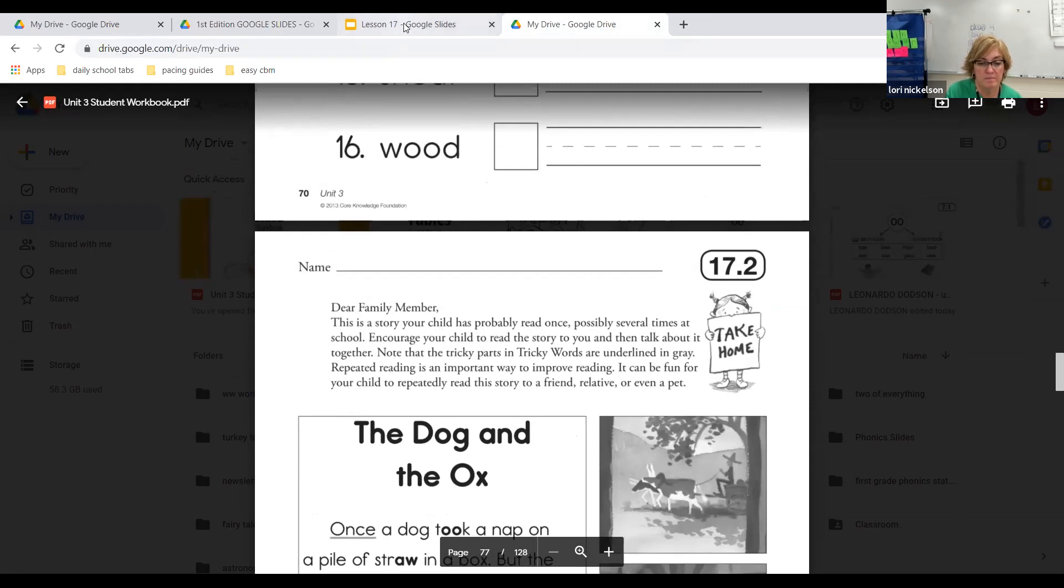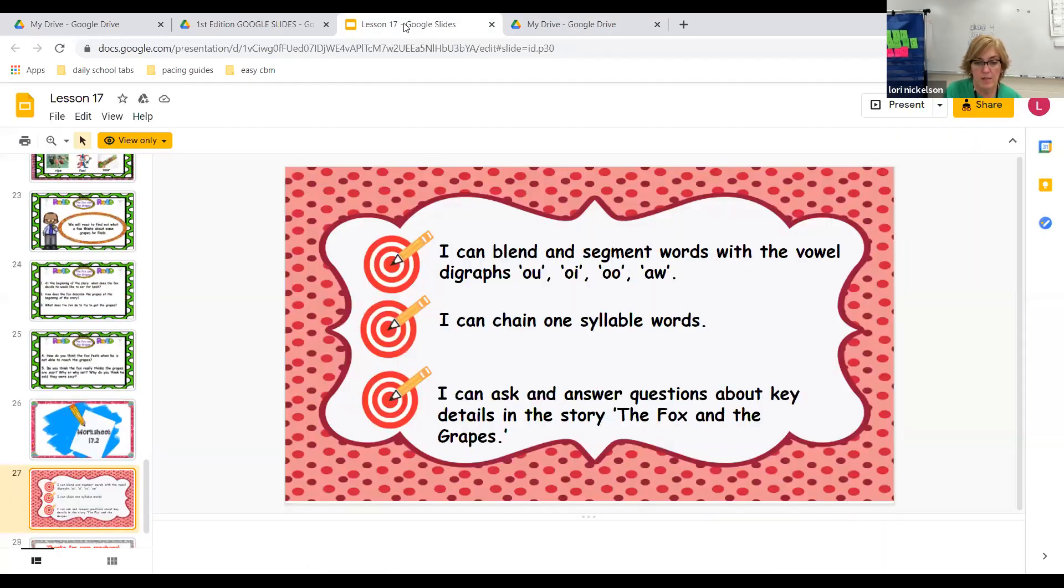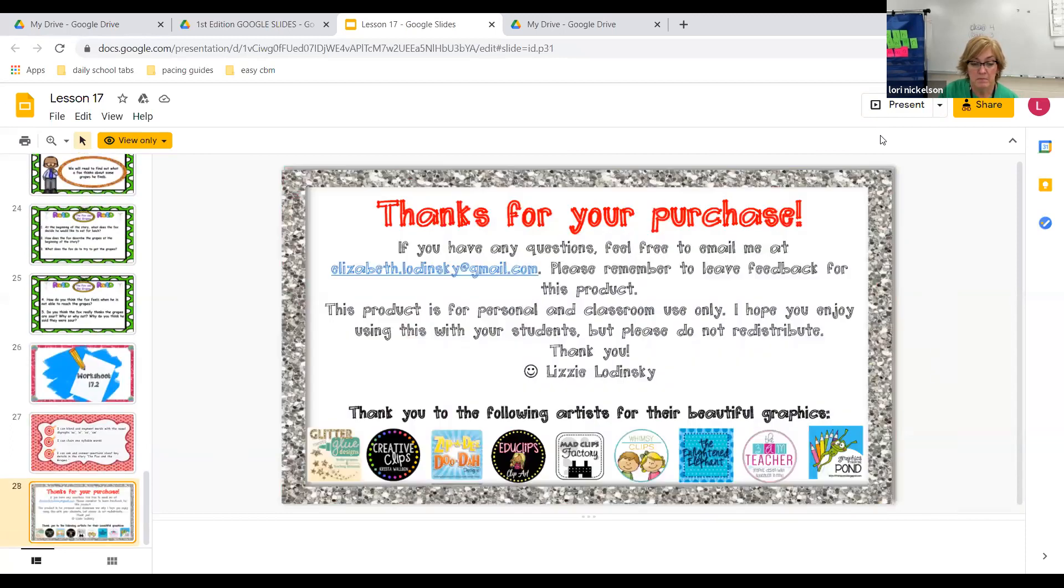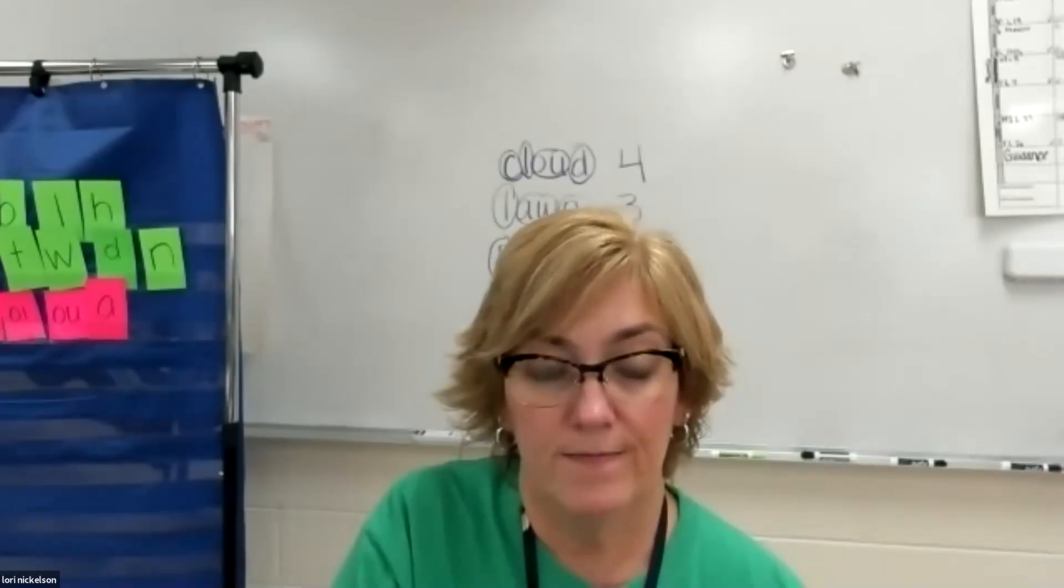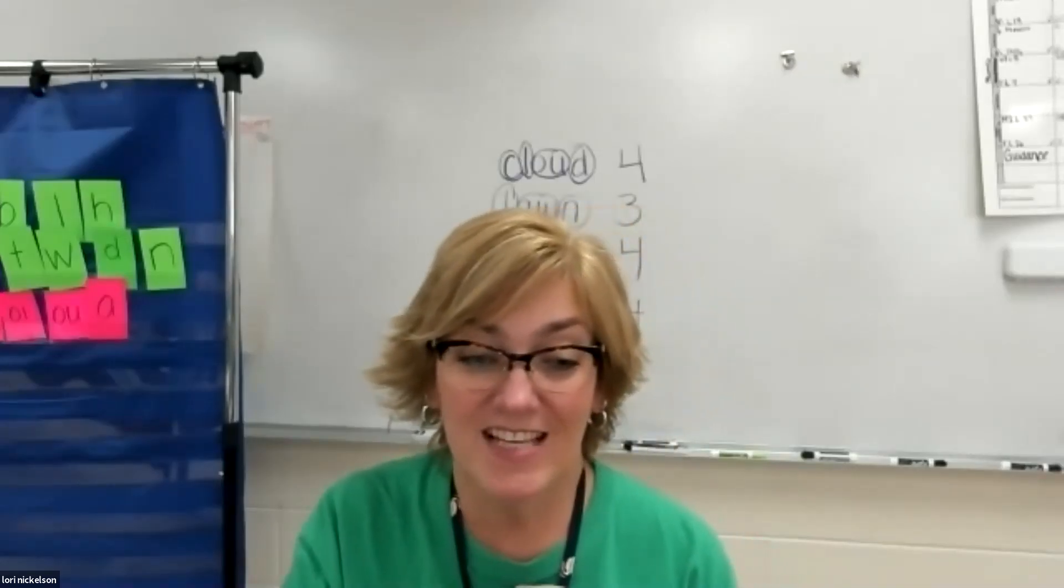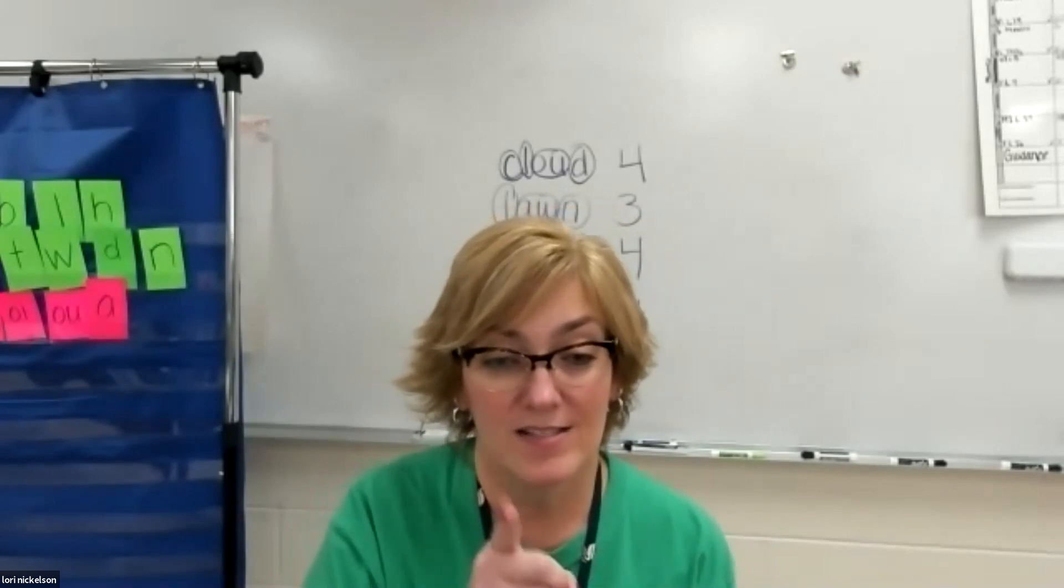So, I can blend and segment words with the vowel digraphs ow, oi, oo, and aw. I can chain one syllable words and I can ask and answer questions about key details in the story, the fox and the grapes. So, let me stop sharing again. All right guys, that is the end of this lesson and I will see you back here tomorrow.